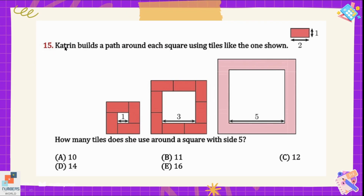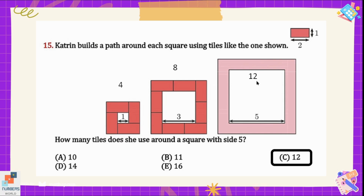Question number 15: Katrin builds a pad around each square using tiles like the one shown. How many tiles does she use around a square with side 5? In the first design she used 4 tiles, in the second she used 8 tiles — 4 plus 4 is 8. So in the third design she will use 8 plus 4, which is 12 tiles. Option C is the correct option here.